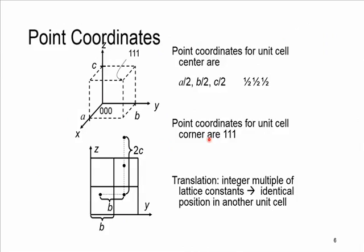In case you need to locate a point in a unit cell, you can get help from point coordinates. As an example, we find the point coordinate for the center of a unit cell. The position of the center is a/2, b/2, and c/2 along the x, y, and z axes respectively, since the center is right in the middle along all three coordinates. We normalize these based on the coordinate indices a, b, c, giving the final point coordinate: one-half, one-half, one-half.